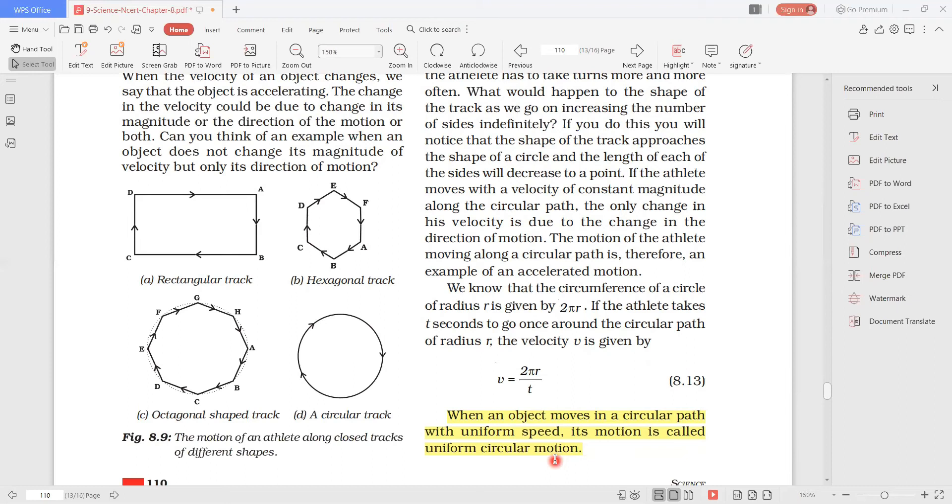we are in a circular path. So when we are in a circular or closed path with a uniform speed, we cover equal distance in equal intervals of time.